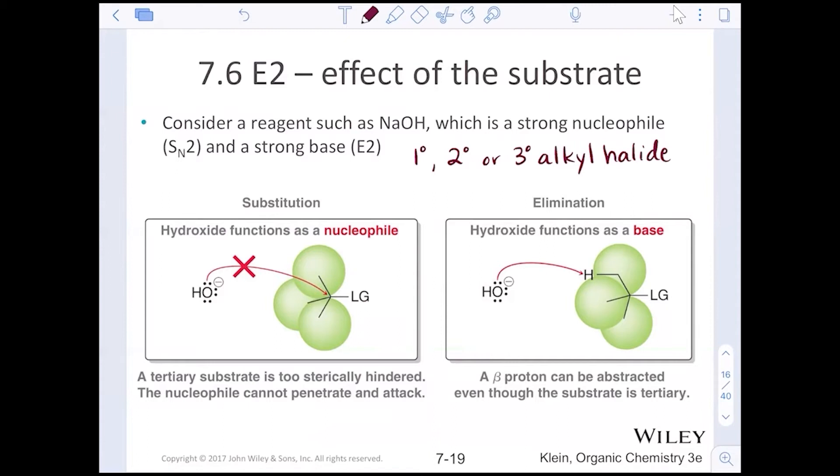Hydroxide cannot get to that alpha carbon in a substitution reaction, but the beta carbon is detached from that. So looking at that reaction, that extra bit of room allows hydroxide on a tertiary alkyl halide to function as a base. So even though we can't do the direct substitution because the alkyl halide is too sterically hindered, and the nucleophile cannot penetrate and attack that alpha carbon because of that steric hindrance, that nucleophile can actually function as a base instead, and a beta proton can be abstracted.